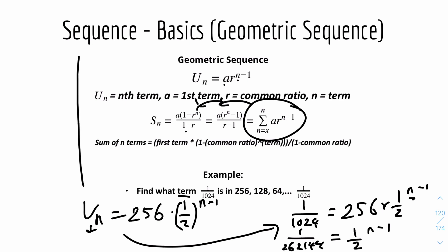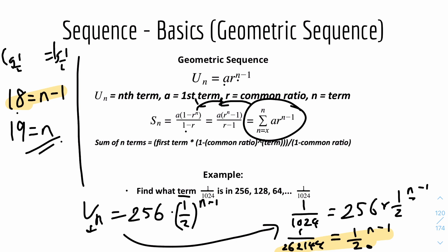Take log base (1/2) on both sides to bring down the power: log base (1/2) of (1 over 262,144) equals n minus 1. The reason we use log base 1/2 is to eliminate the base and convert the power to a normal integer. Putting it into the calculator gives 18 equals n minus 1, so rearranging gives n equals 19. That means 1 over 1024 is the 19th term in the sequence.